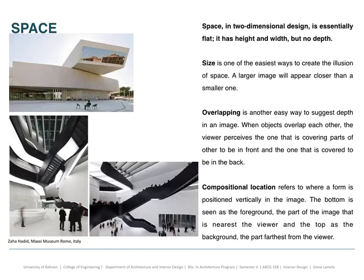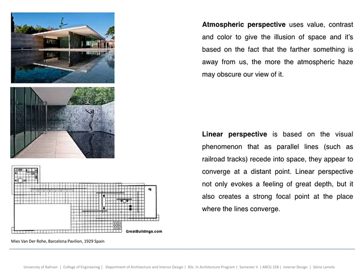Then we have space. In two-dimensional design, space is essentially flat — it has height and width but no depth. You can play with space by manipulating size, using overlapping shapes to give an idea of three-dimensionality, or by the location of elements in a composition — one shape related to another can appear nearer or farther depending on how you organize it. Atmospheric perspective — through the use of value, contrast, and colors — can give different illusions of space. Linear perspective is based on a visual phenomenon where all parallel lines recede into space and appear to converge at a distant point.